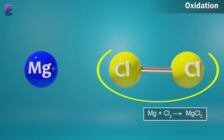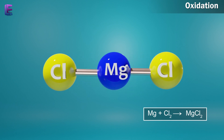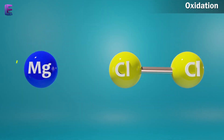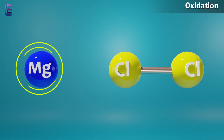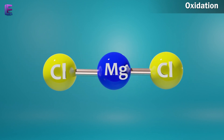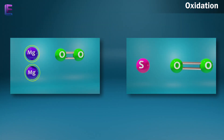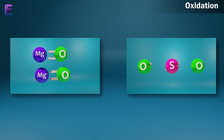Mg + Cl2 gives rise to MgCl2. In this reaction, magnesium combines with chlorine, an electronegative substance, and gets oxidized. In the above reactions, the elements magnesium and sulfur are oxidized on account of addition of oxygen to them.